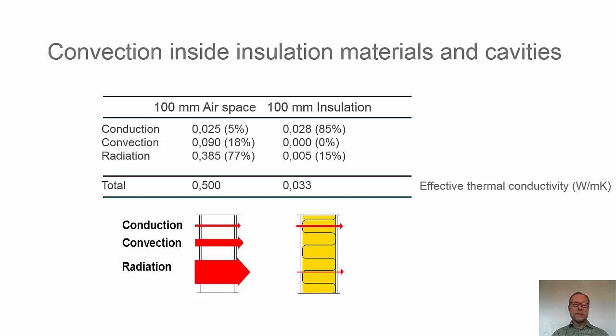We have some rough numbers. The red arrows show also the magnitude of the different heat transfer modes. The main part of heat transfer is due to radiation across the air space. We do also have some convection, rotation by natural convection, and conduction in the air.